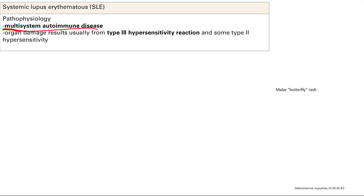Type 3 hypersensitivity is the immune complex deposition. There's also a little bit of type 2 hypersensitivity, which is direct antibody damage. But mainly this is type 3, where antibody complexes with antigen, and then that deposits in different organs and causes damage.